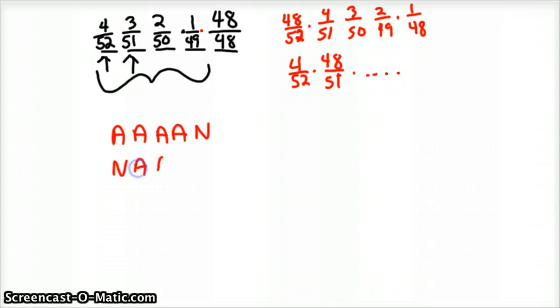So your sample space would really be ace, ace, ace, ace, not ace; ace, ace, ace, ace, ace; ace, ace, ace, ace on down the line. And there would be one, two, three, four, five places to place that in.